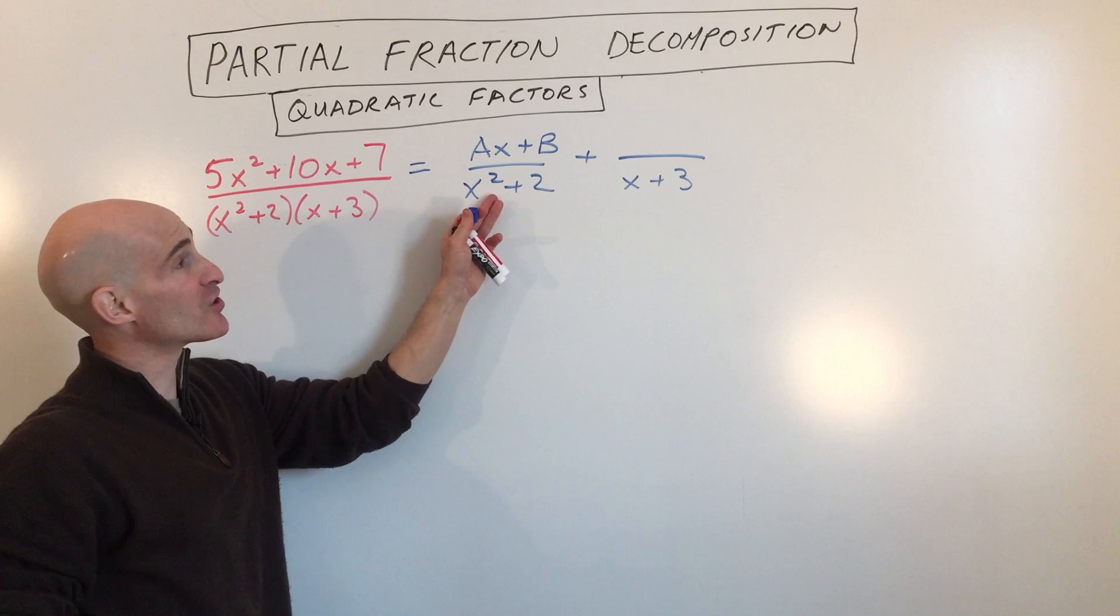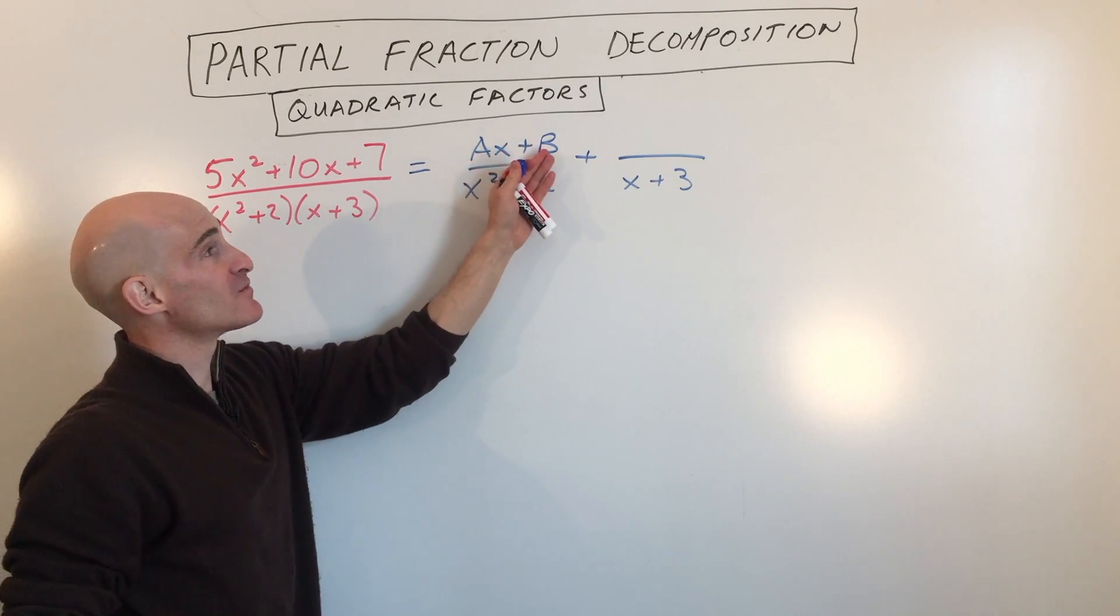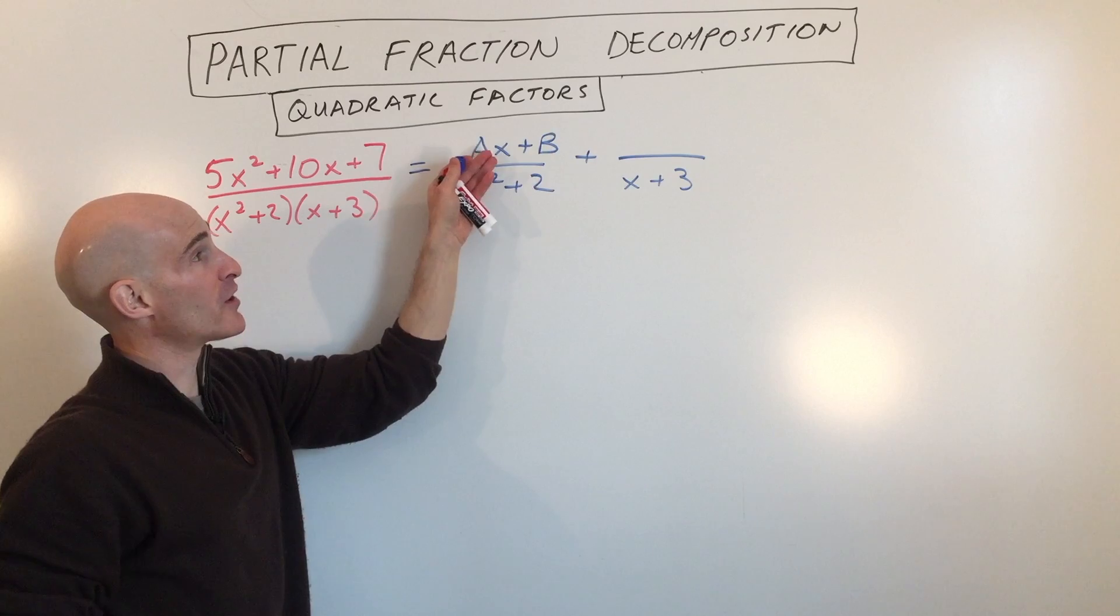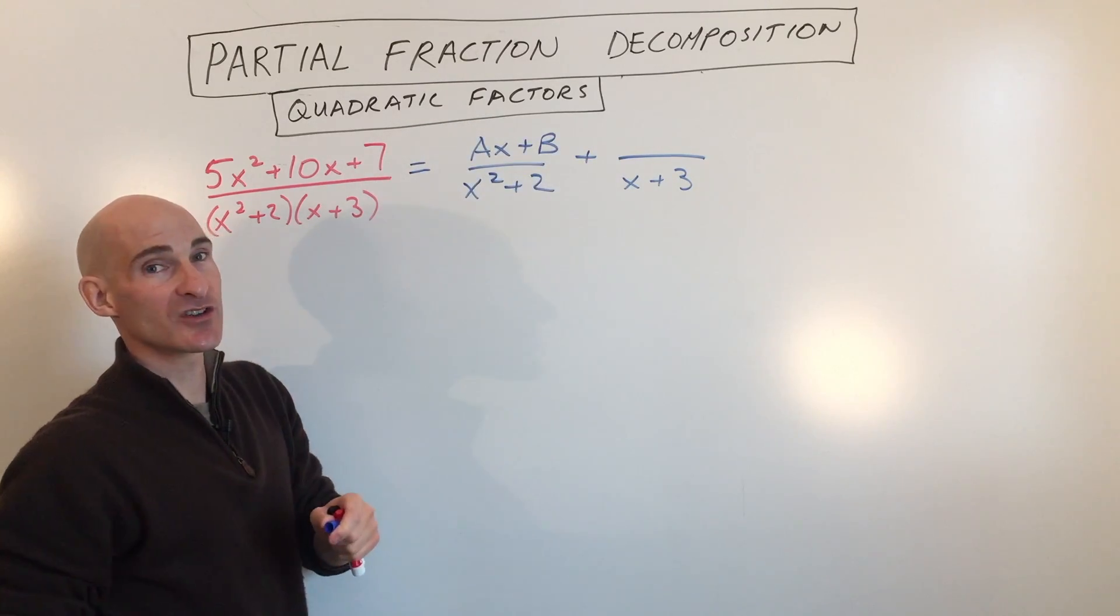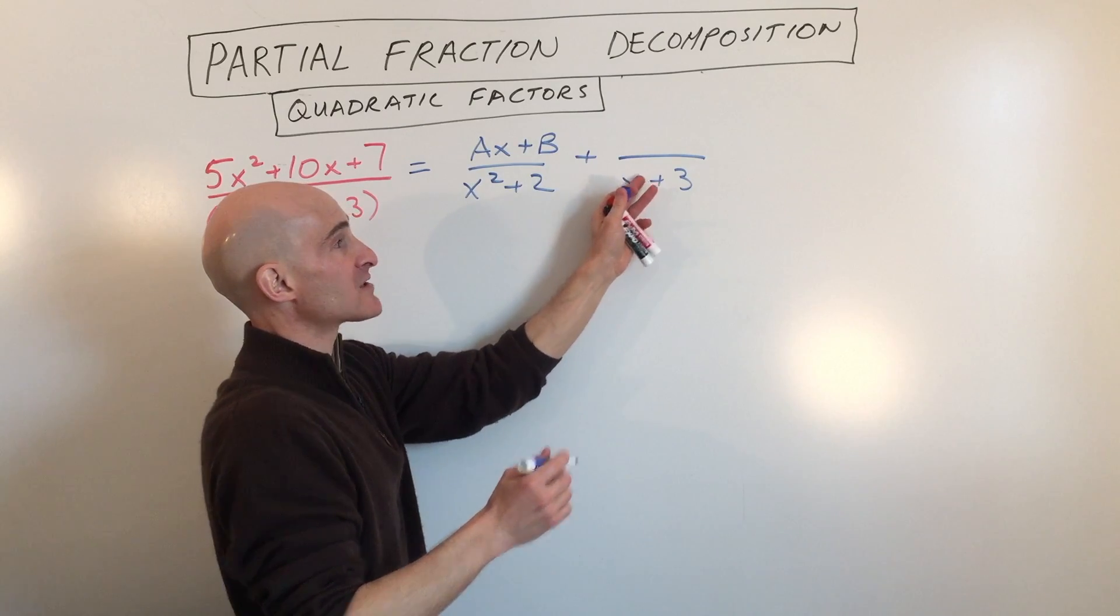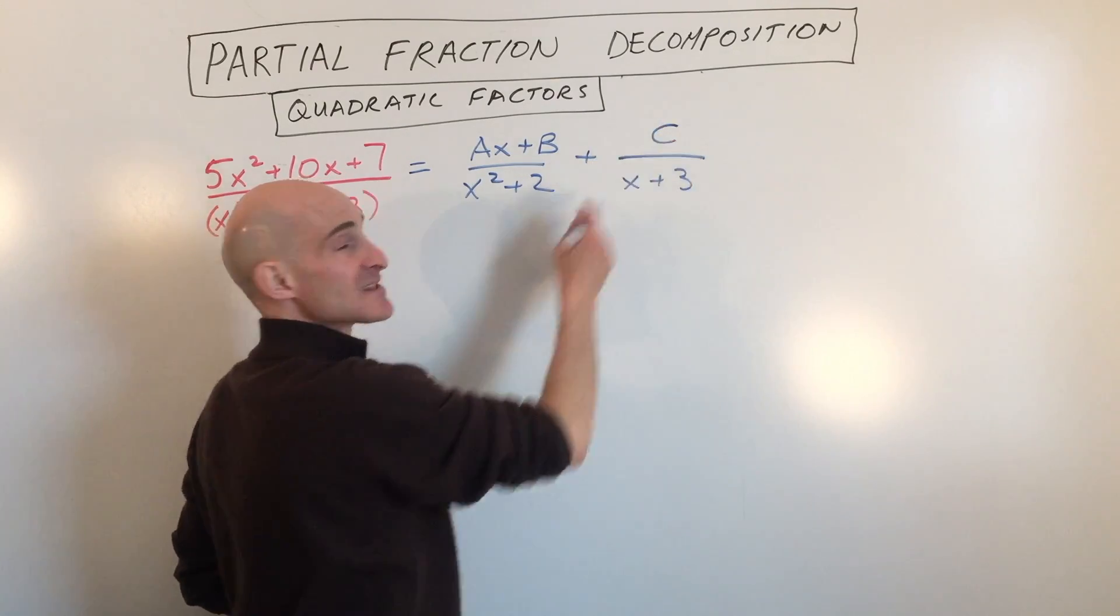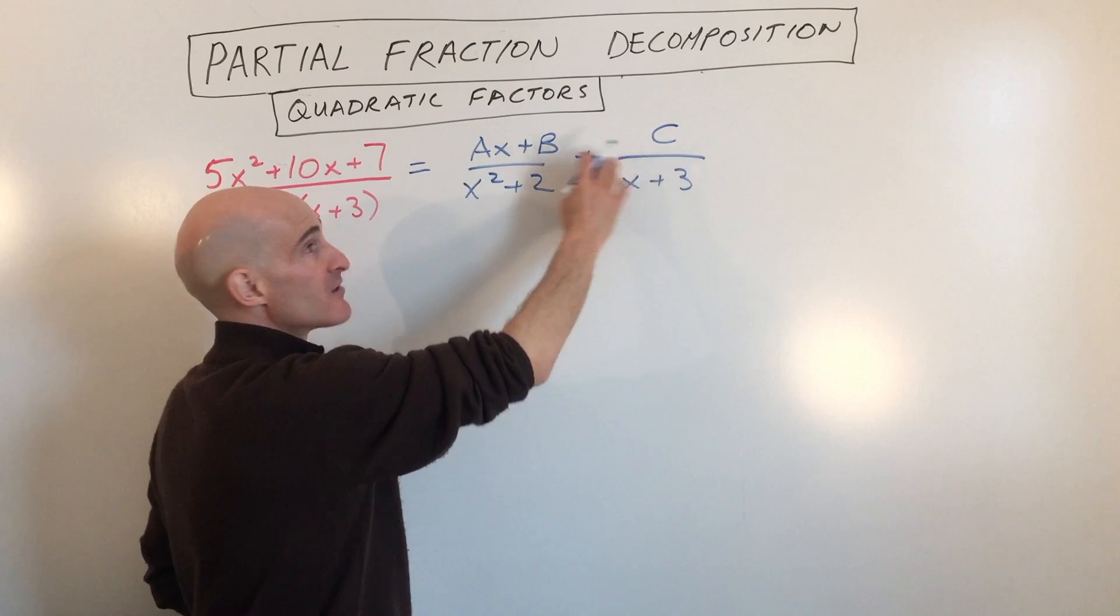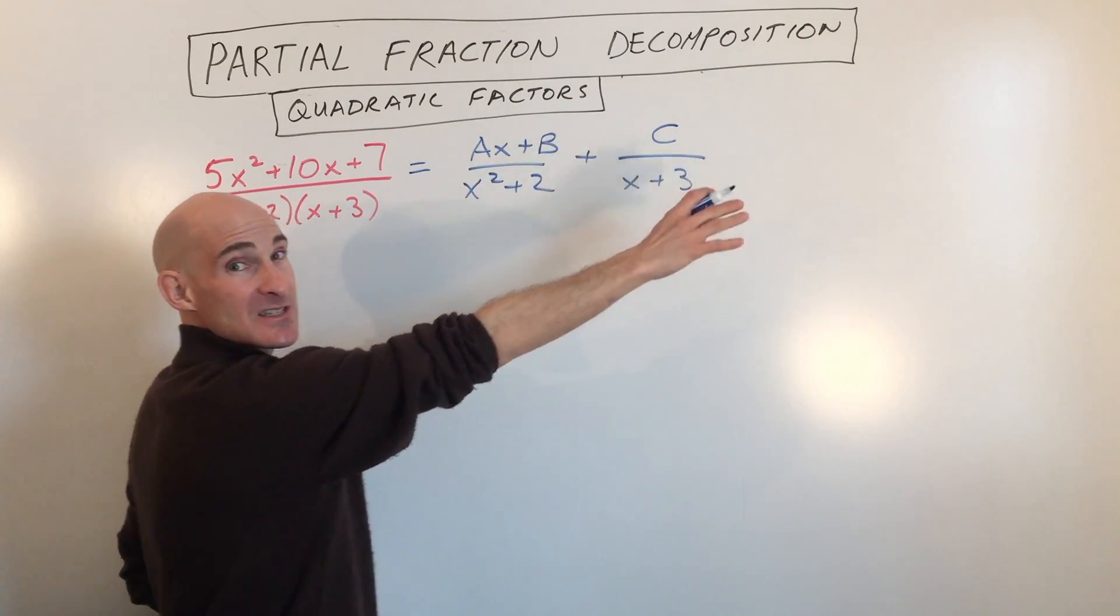Now if this was a cubic term, then we would want ax squared plus bx plus c. So we would go one degree lower and go in descending order until you get to the constant. This one's a linear factor, x plus 3, x to the first. So I'm just going to make this a constant c. You don't want to reuse any of the variables, so that's why I keep going a, b, c, d, e like that.